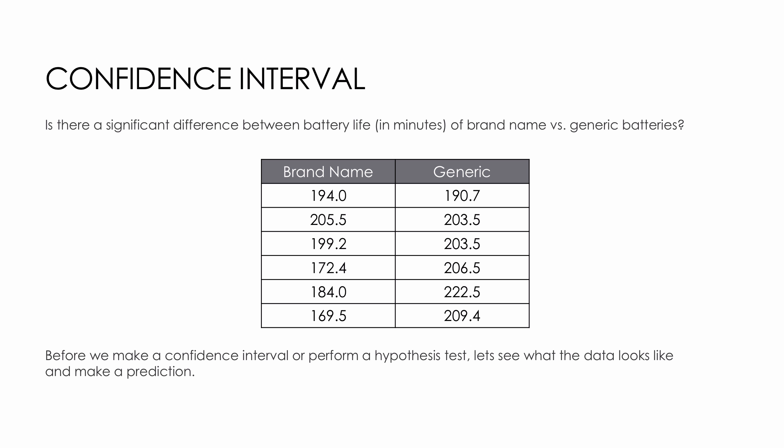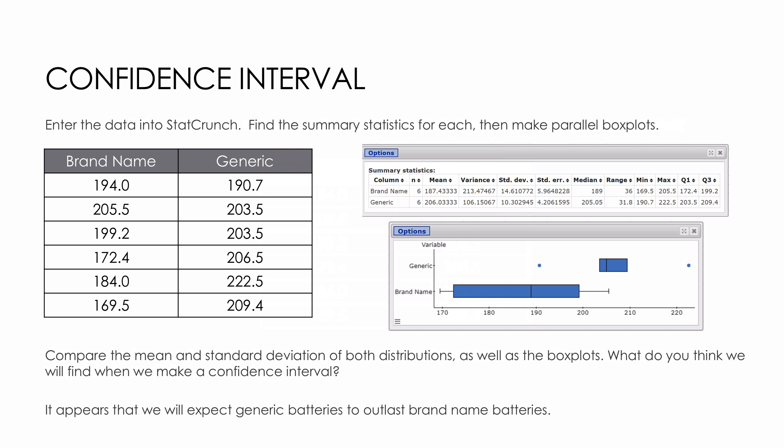We're going to go through how to find this with a test, but statistics should make sense and all go together. Before we make a confidence interval or perform a hypothesis test, I want to just look at our data. I've done this ahead of time and went into StatCrunch, found the summary stats for each, and then made some parallel box plots.